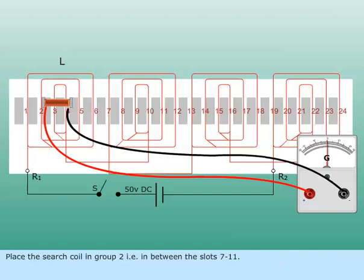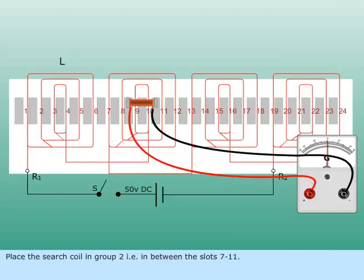Place the search coil in group 2, i.e., in between the slots 7 to 11. Galvanometer indicating pointer moves towards right.